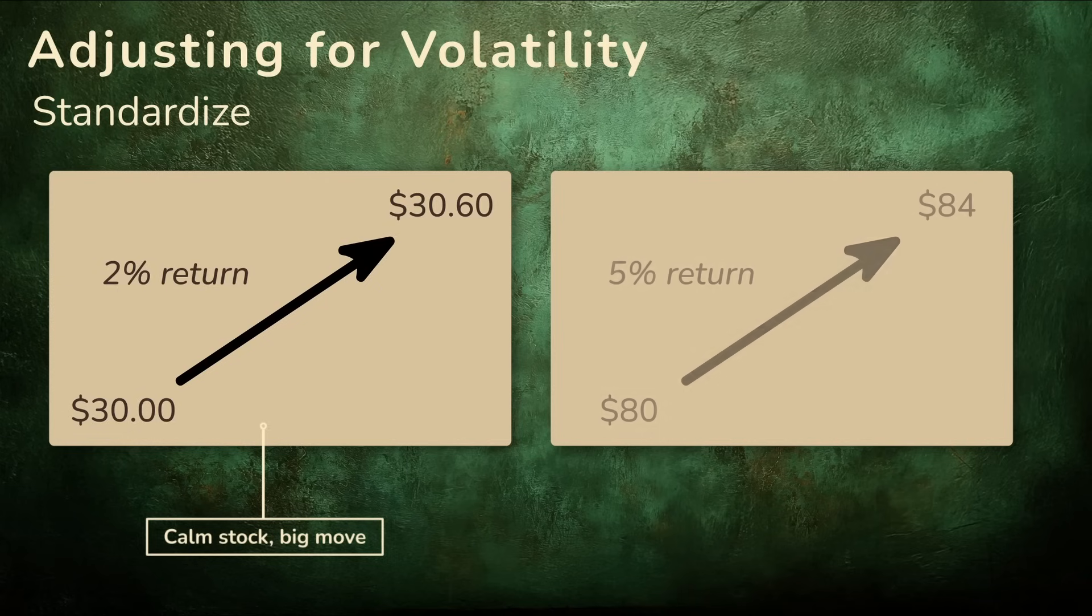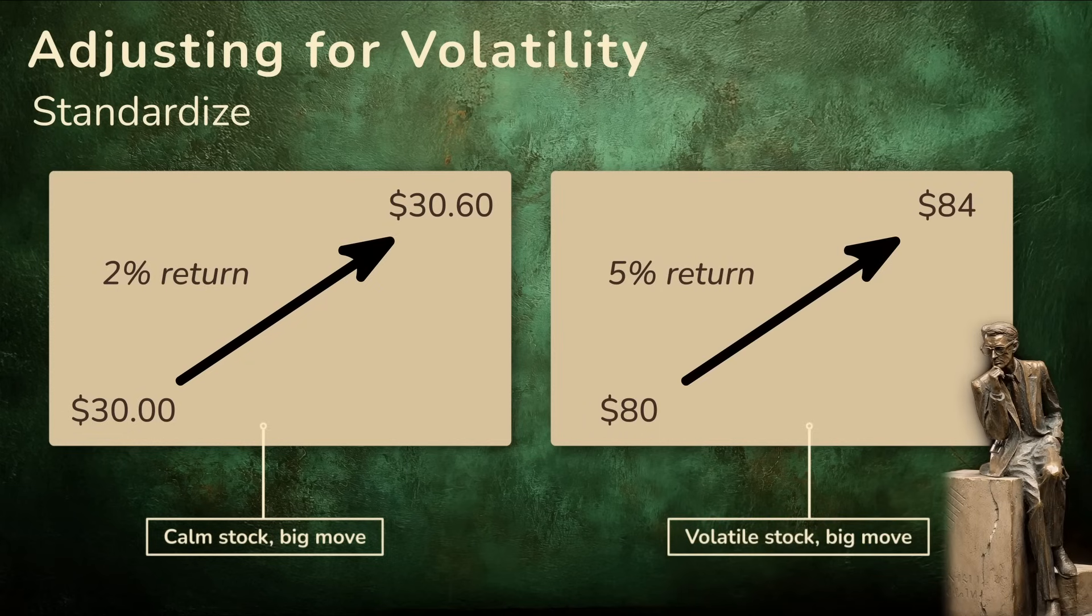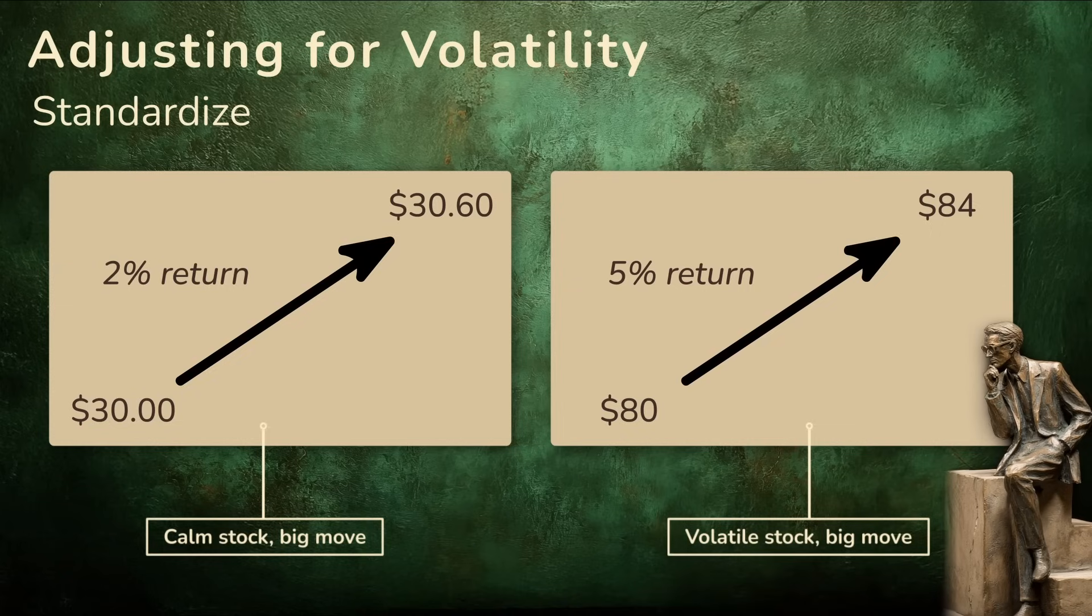In other words, we're making sure that a 2% move for a calm stock is seen as just as significant as, say, a 5% move for a more volatile one.